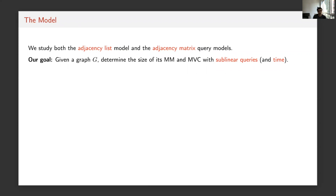Given a graph G, our goal is to determine the size of maximum matching or minimum vertex cover by querying a sublinear number of entries of either the adjacency list or adjacency matrix. Besides query complexity, there's also a notion of time complexity — once you query a subset of entries, you can spend more time processing them. In this work, everything I discuss about time complexity is linear in query complexity, so I won't distinguish the two.